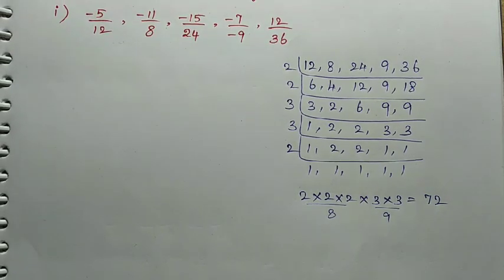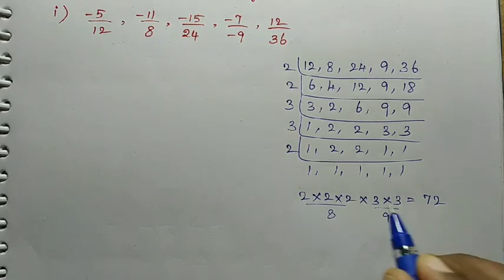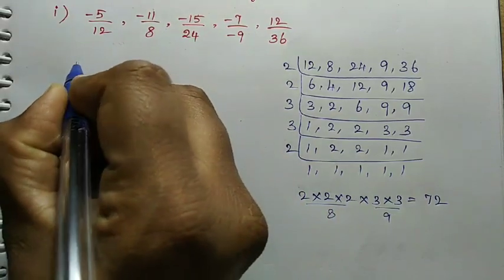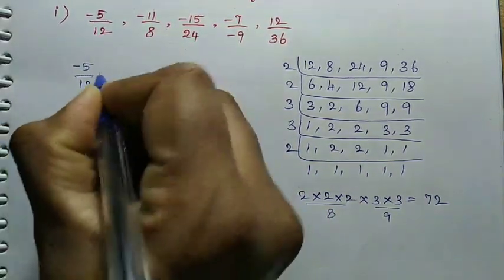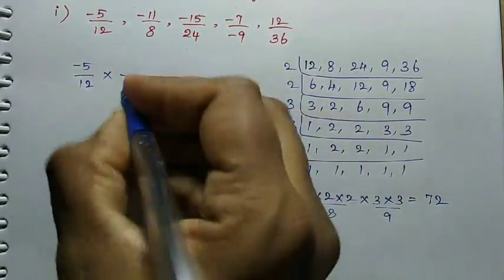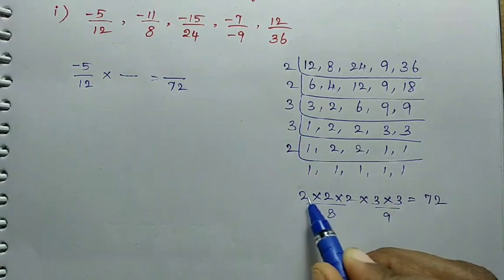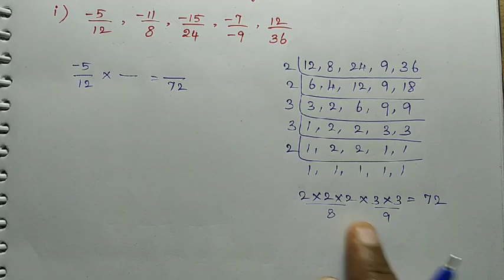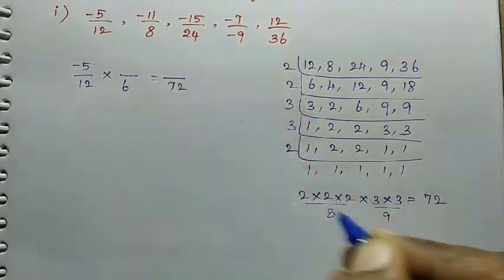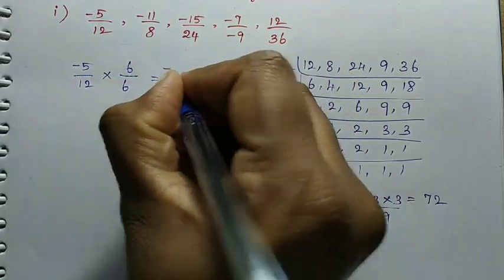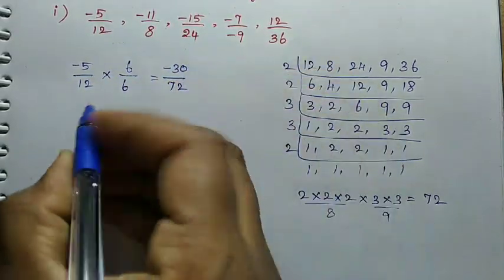Now we change all the rational numbers to have denominator 72, which makes them easy to compare. First value: minus 5 divided by 12. The denominator needs to become 72. 12 multiplied by 6 equals 72. The remaining factors are 2 and 3, giving 2 threes = six. So the numerator: minus 5 multiplied by 6 = minus 30. So minus 5/12 becomes minus 30/72.